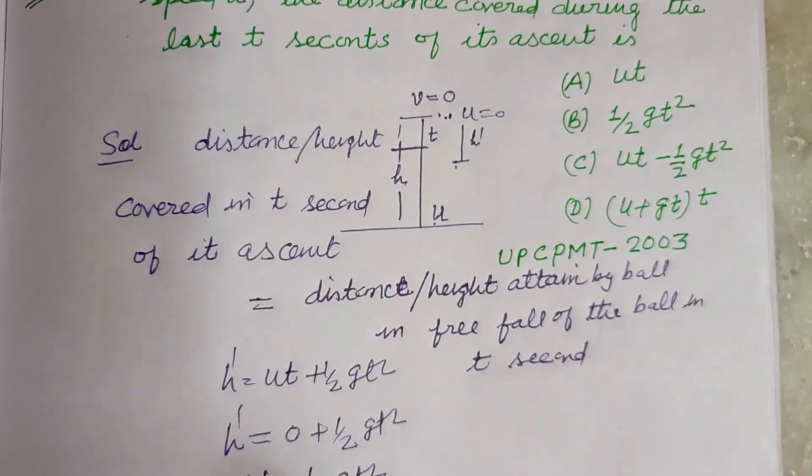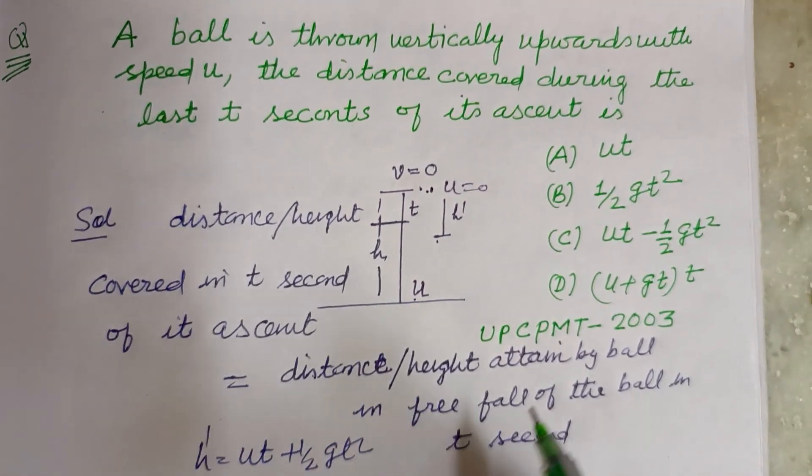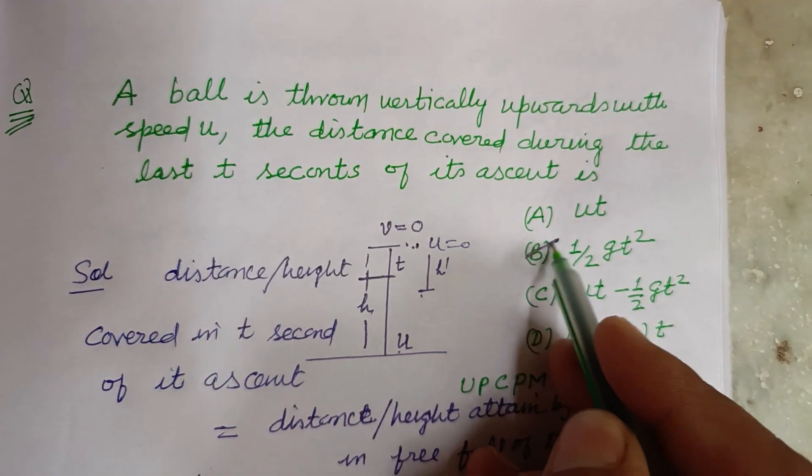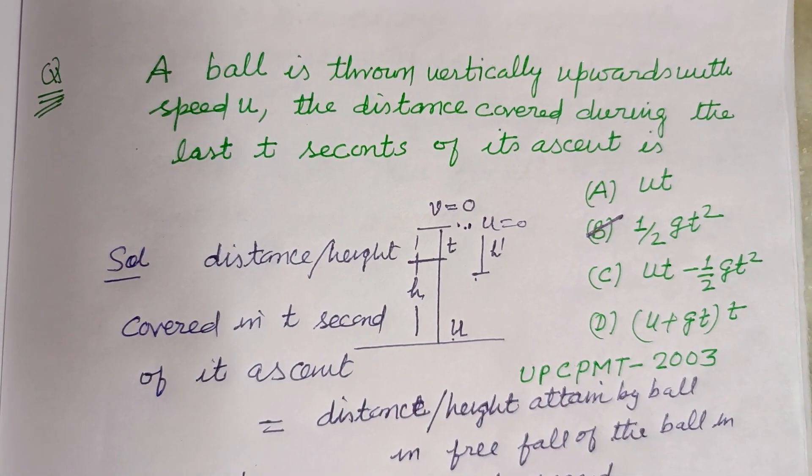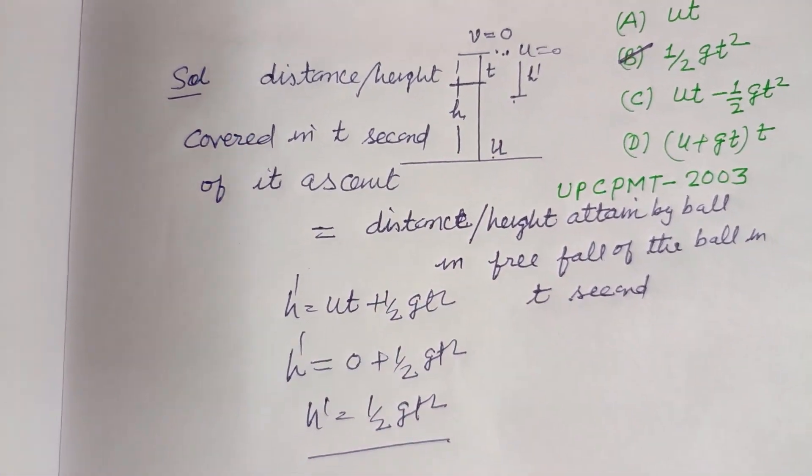In downward motion, h dash equals half gt squared is the correct answer, so option B is the correct answer of this question. I hope you got it. Please like the video, subscribe the channel. Thanks for watching.